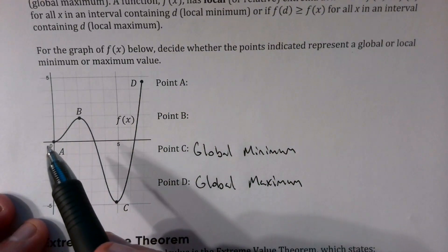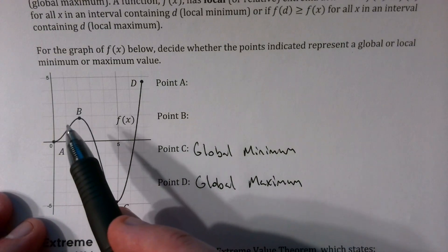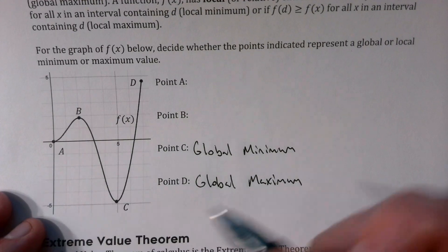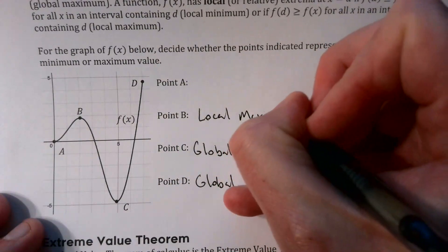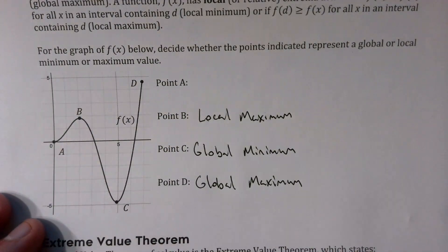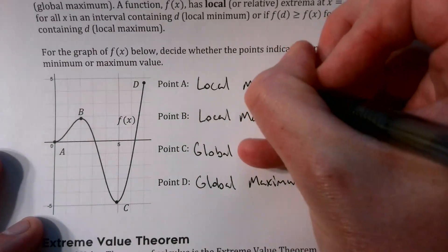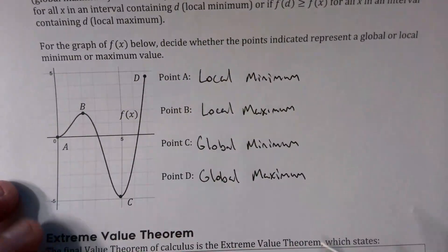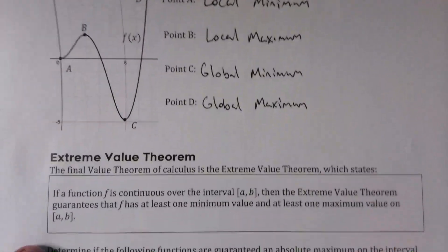However, looking at points A and B, we can still describe local extrema. Point B is a maximum in a certain area containing B — that's what we mean by a local maximum. Point A is the lowest point within a certain interval; it's not the lowest point overall, but it is a local minimum value for f(x). All of these fall under the umbrella of what we call extrema.